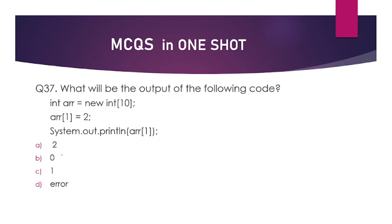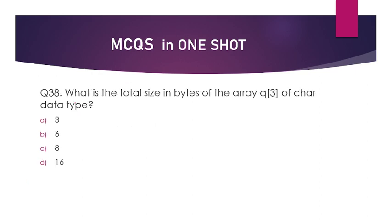What will be the output of the following code? int R = new int[10]; R[1] = 2; System.out.println(R 1). The output will be 2, 0, 1, or error? The answer is error, because square brackets are not given here, which makes the code invalid.